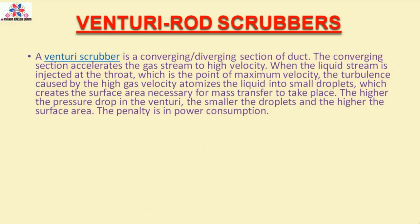Venturi Rod Scrubbers: A Venturi scrubber is a converging-diverging section of duct. The converging section accelerates the gas stream to high velocity. When the liquid stream is injected at the throat — which is the point of maximum velocity — the turbulence caused by the high gas velocity atomizes the liquid into small droplets, which creates the surface area necessary for mass transfer to take place. The higher the pressure drop in the Venturi, the smaller the droplets and the higher the surface area. The penalty is in power consumption.